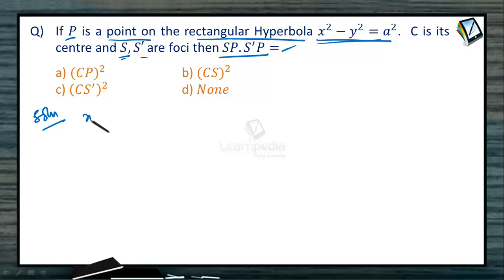See the solution of this problem. x² - y² = a² is this rectangular hyperbola.